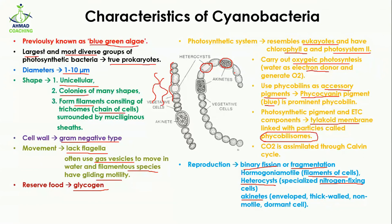The akinetes are non-motile because they are attached to other cells, and they are dormant cells, meaning they are not dividing actively. That was all about the characteristics of cyanobacteria. If you have any questions, you can ask in the comment section.